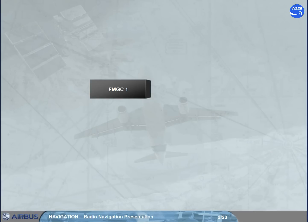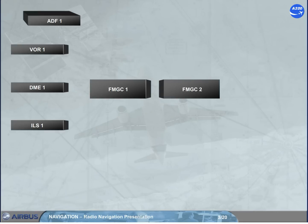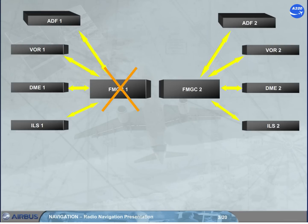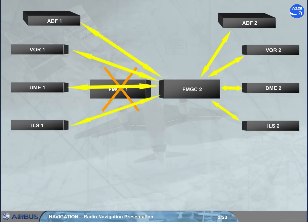The FMGC is the basic means for tuning the navaids. In normal operation, each FMGC automatically controls its own receivers, as shown. Note: in case of one FMGC failure, the remaining FMGC may control all receivers.